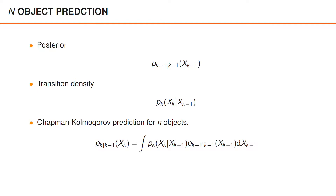In this video, we're going to learn about prediction of the n-object density. We have a posterior density, a transition density, and then we have the Chapman-Kolmogorov prediction, which takes the transition density, the posterior, and marginalizes over the previous state. We will first have a look at how the transition density is modeled in n-object tracking, and then we will see what the predicted density is.